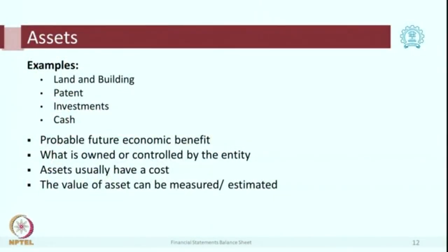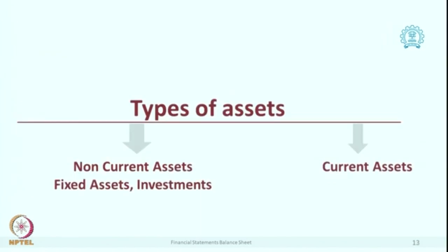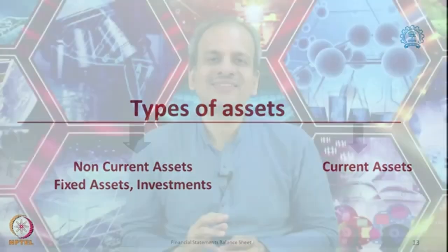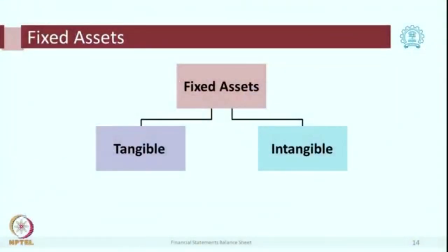Let us briefly revise assets and liabilities. An asset is a property or resource of a company which has a value and is likely to give some probable future cash flow. There are two major types of assets: non-current and current. Within non-current, you have fixed assets and investments. Fixed assets are infrastructure or property lasting more than one year, acting as a catalyst in operations. There are two types: tangible and intangible fixed assets.